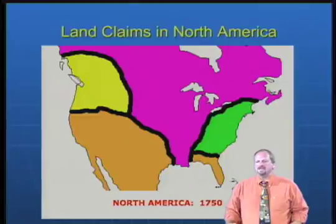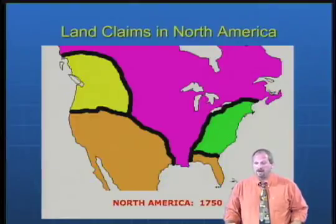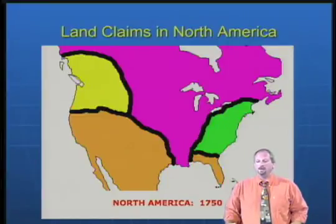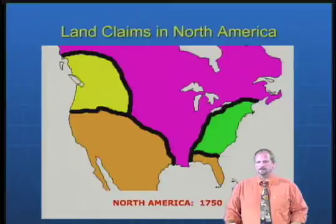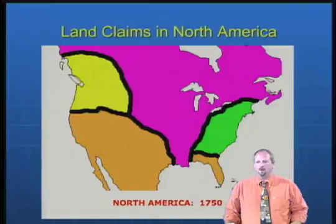In 1750, the land claims in North America were dominated by three foreign nations. In green would be the English settlement, in pink you would see the French settlement, and orange would be the Spanish.